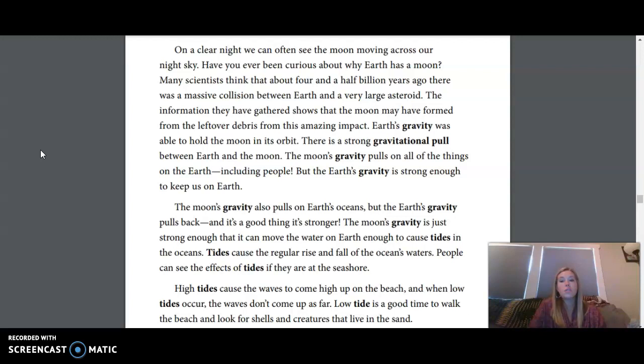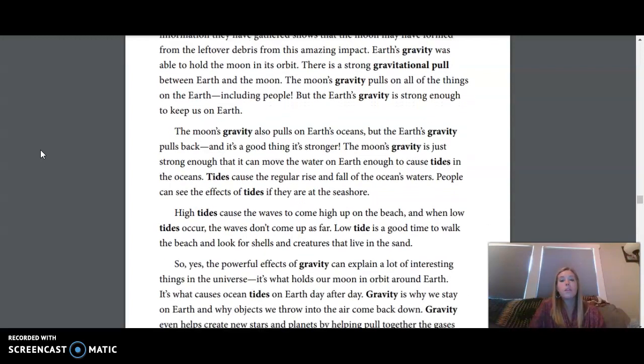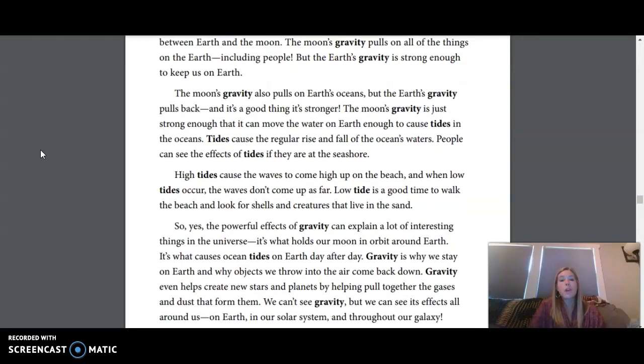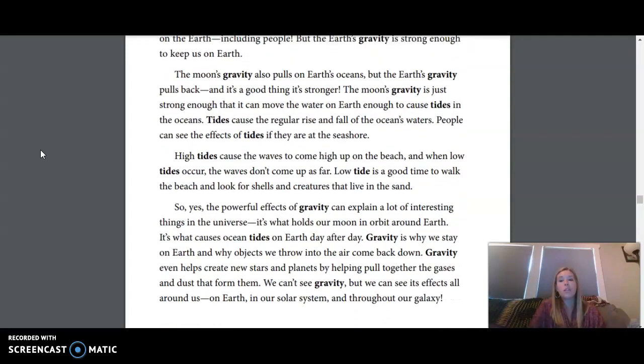There is a strong gravitational pull between Earth and the Moon. The Moon's gravity pulls on all of the things on the Earth, including people, but the Earth's gravity is strong enough to keep us on Earth. The Moon's gravity also pulls on Earth's oceans, but the Earth's gravity pulls back, and it's a good thing it's stronger. The Moon's gravity is just strong enough that it can move the water on Earth enough to cause tides in the oceans. Tides cause the regular rise and fall of the ocean's waters.